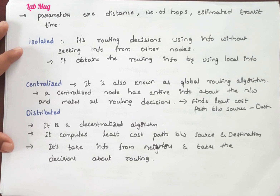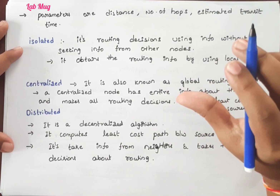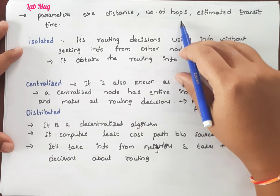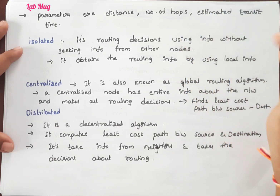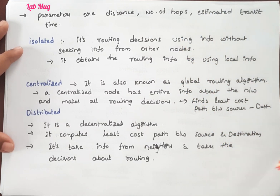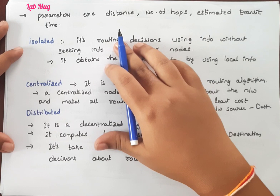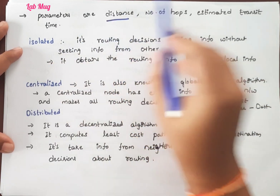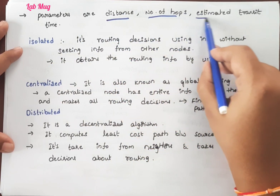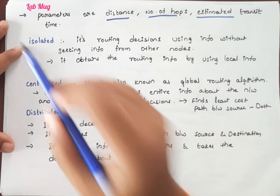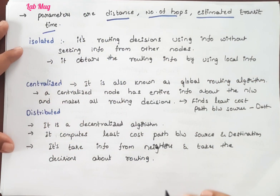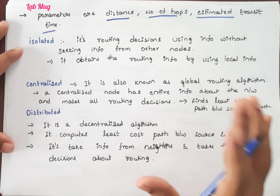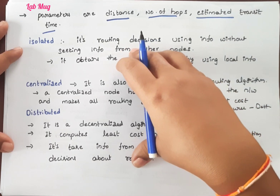The main parameters or metrics we use in adaptive routing — as we discussed yesterday — include hop count, bandwidth of the transmit data, and delay time. So the main parameters are: distance, number of hop counts, and estimated transmitting time. These are the metrics used when making adaptive routing decisions.